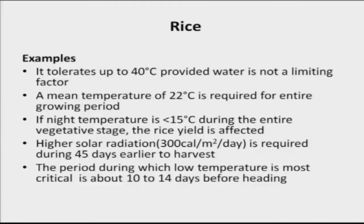If you take rice, as we discussed in the cardinal temperature, the rice crop tolerates up to 40 degrees centigrade provided water is not a limiting factor. If water is absent — suppose the rice is being raised in a dryland or rainfed situation where moisture is not available — and the temperature goes to 40 degrees, the rice yield has to be sacrificed. But under irrigated conditions, there is an adaptation strategy: if the temperature goes beyond 40 degrees centigrade, go for irrigation to ameliorate the negative effects of increased temperature.